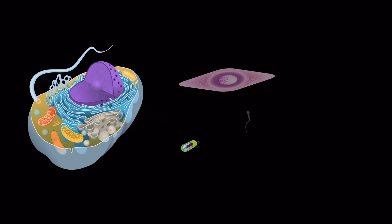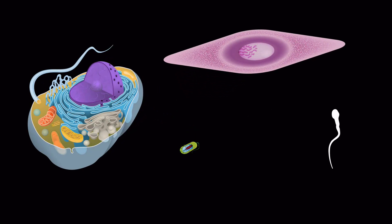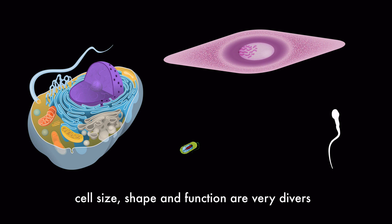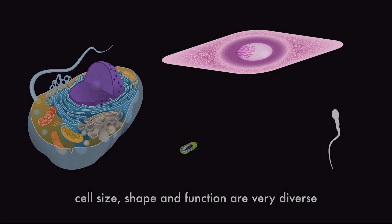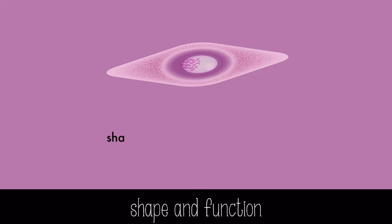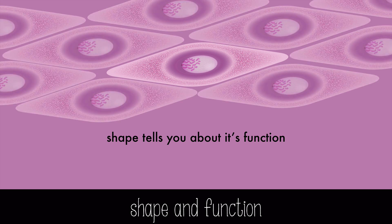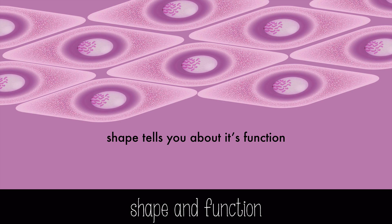Cell size, shape, and function are actually very diverse. A cell's shape tells you about its function. This is a smooth muscle cell, which is connected to other muscle cells in places like the stomach. It can contract to move food in the stomach.